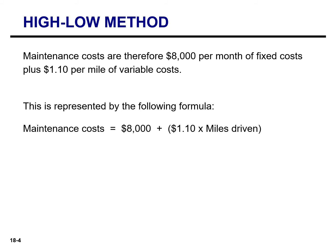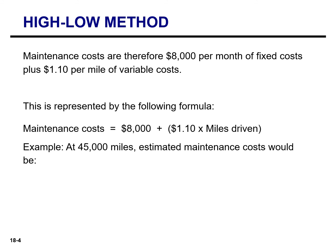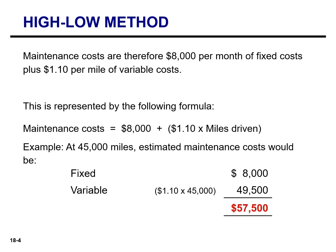We've determined that we have $8,000 of fixed cost per month, and that our variable cost was $1.10 per mile. So we can come up with the following formula: maintenance cost equals $8,000 plus $1.10 times the miles driven. So if we estimate that we're going to drive 45,000 miles, our fixed component is $8,000 and our variable component is $1.10 multiplied by 45,000 miles, which equals $49,500. Adding the fixed and variable components, we arrive at a total maintenance cost of $57,500.